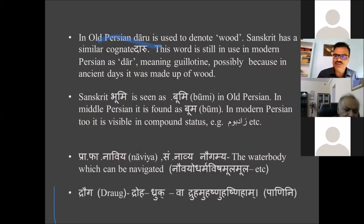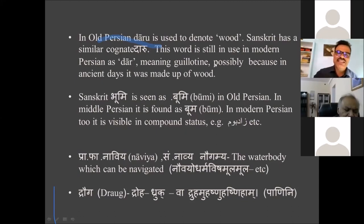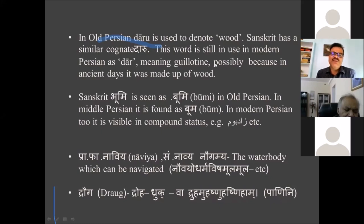In Old Persian, Daru is used to denote wood — Sanskrit has the similar cognate Daru — still in use in modern Persian as Dar, meaning the gallows or guillotine, possibly because in ancient days it was made of wood. Sanskrit Bhoomi is seen as Bhoomi in Old Persian and in Middle Persian. In modern Persian, it is visible not as a distinct word but in compounds, such as Zadbhoom, meaning motherland.